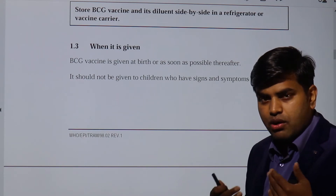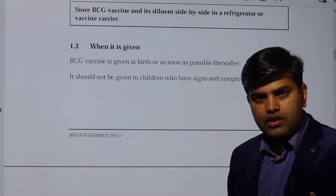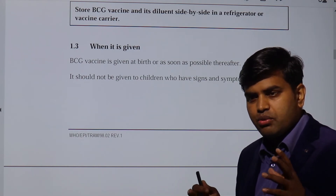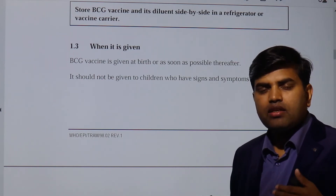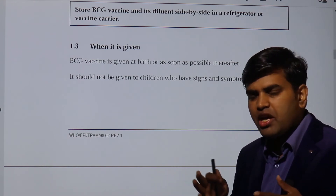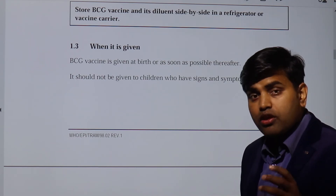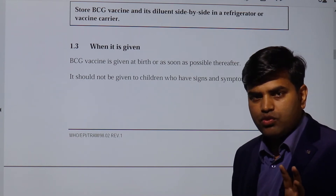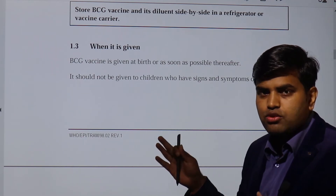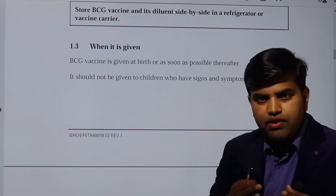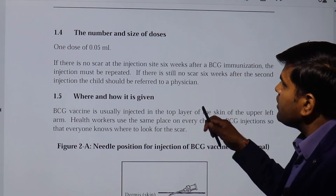Although Mycobacterium bovis has been weakened by repeated subculture, it is still a live bacterium that multiplies inside the body. In an immunocompromised patient with no immune system, it will cause disease. It is important to screen children for immunodeficiency before vaccination, as the vaccine will harm rather than benefit such patients. I have personally seen a case in India of a Pakistani newborn with severe immunodeficiency who had received BCG with devastating consequences.